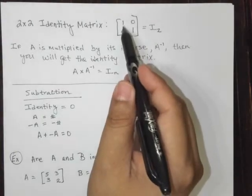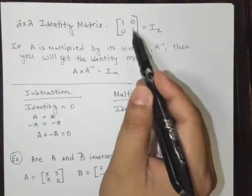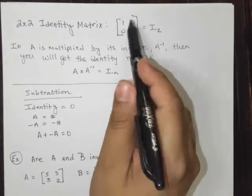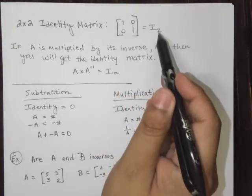So you could have a 3 by 3: 1, 0, 0, 0, 1, 0, and 0, 0, 1 in the third row. But this is in general just the standard 2 by 2 identity.